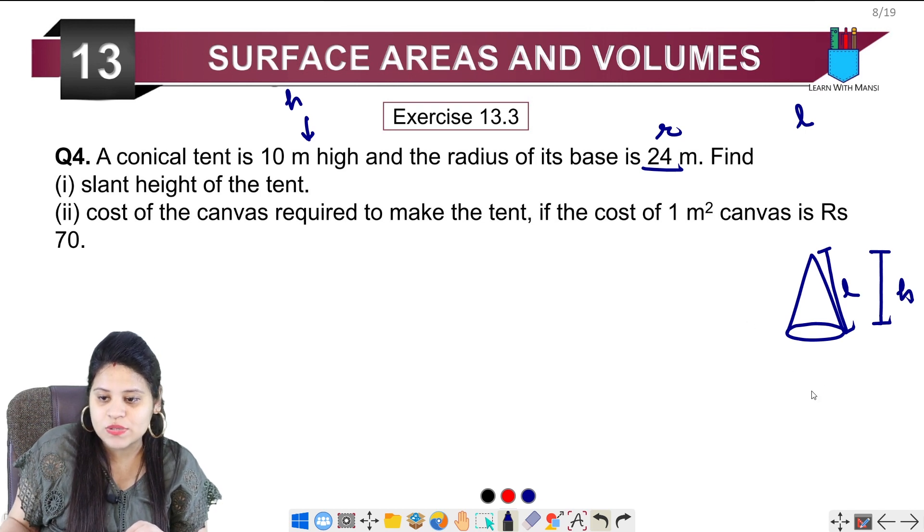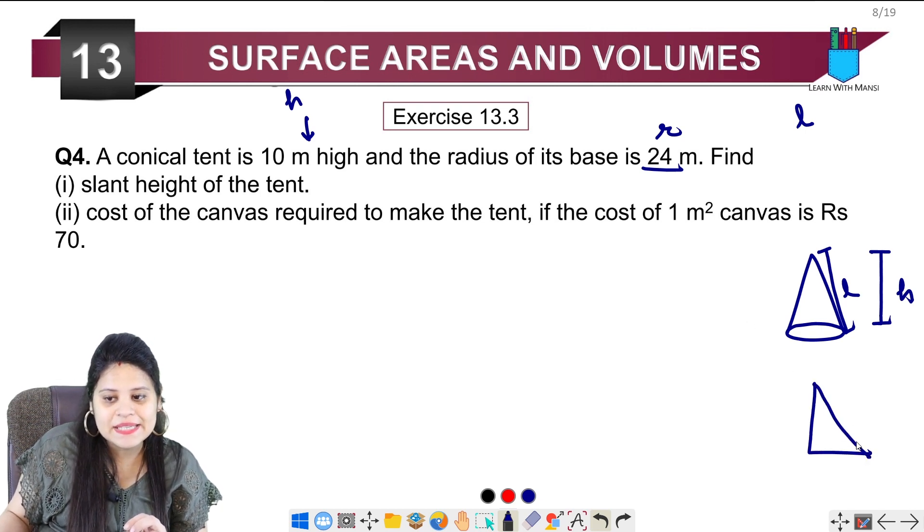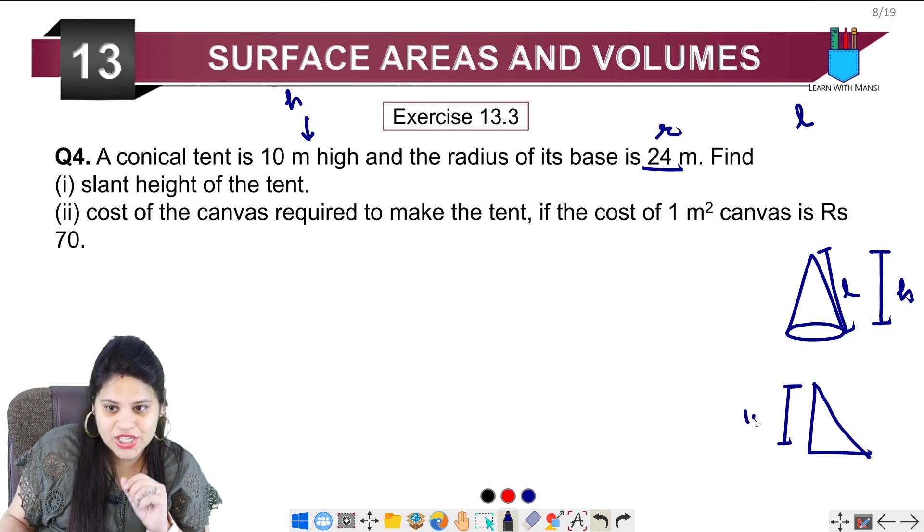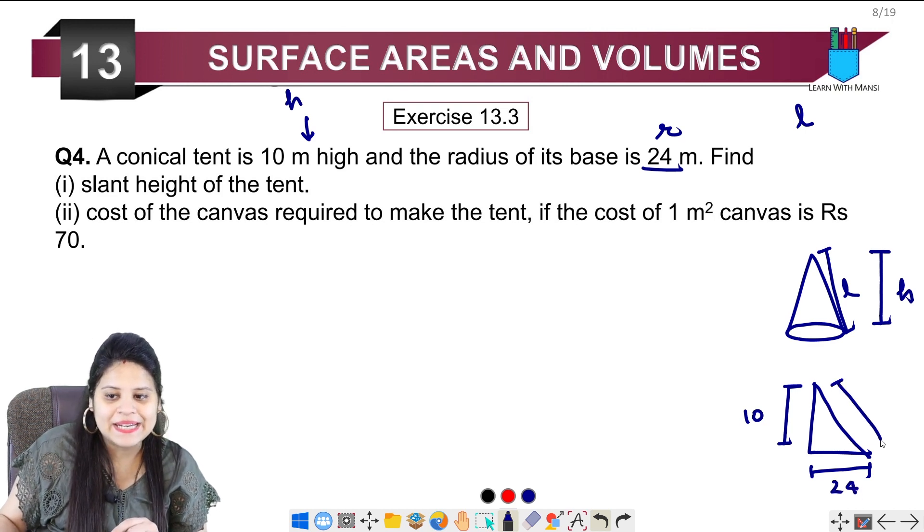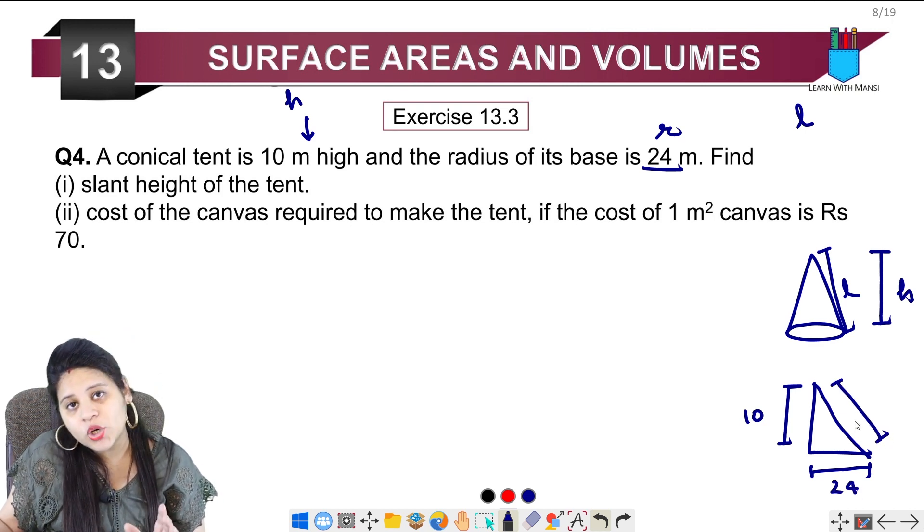How do we start with slant height? It's simple. If I look at this height, this height is 10 meter. Radius is given, which is 24 meter. We have to find the slant height. You can use Pythagoras theorem.